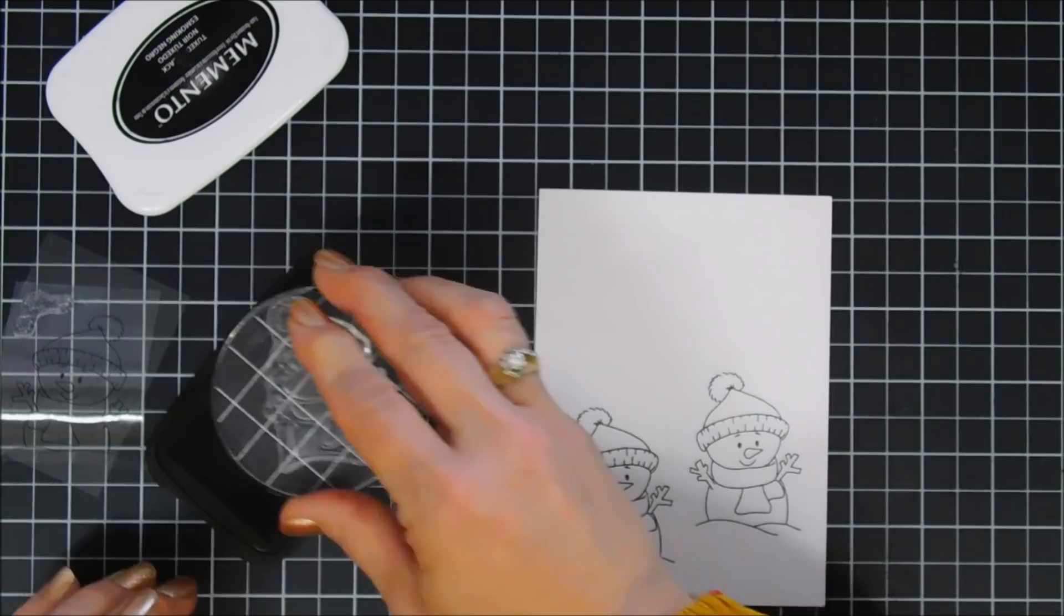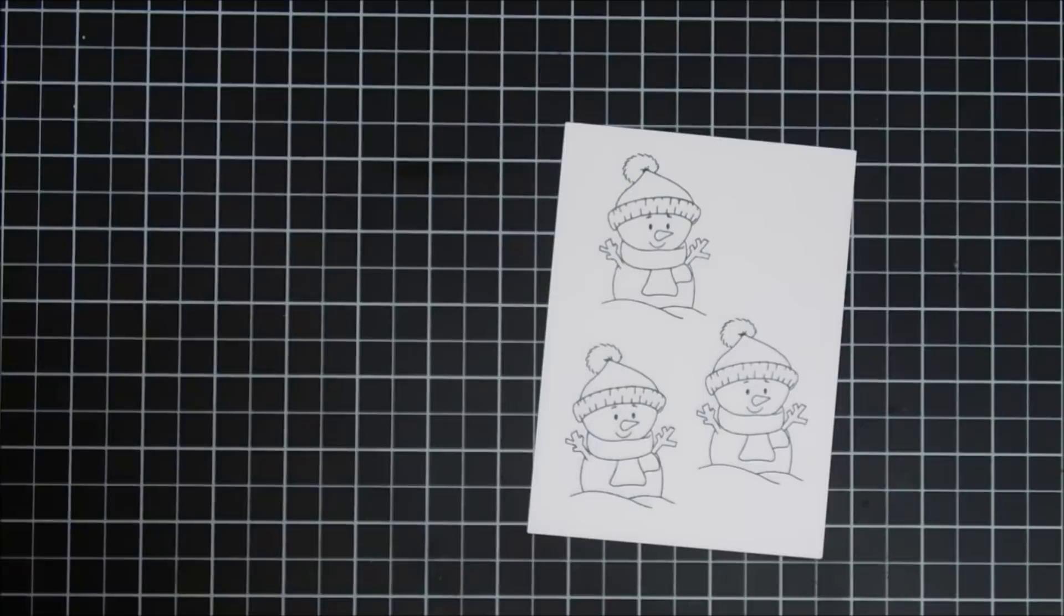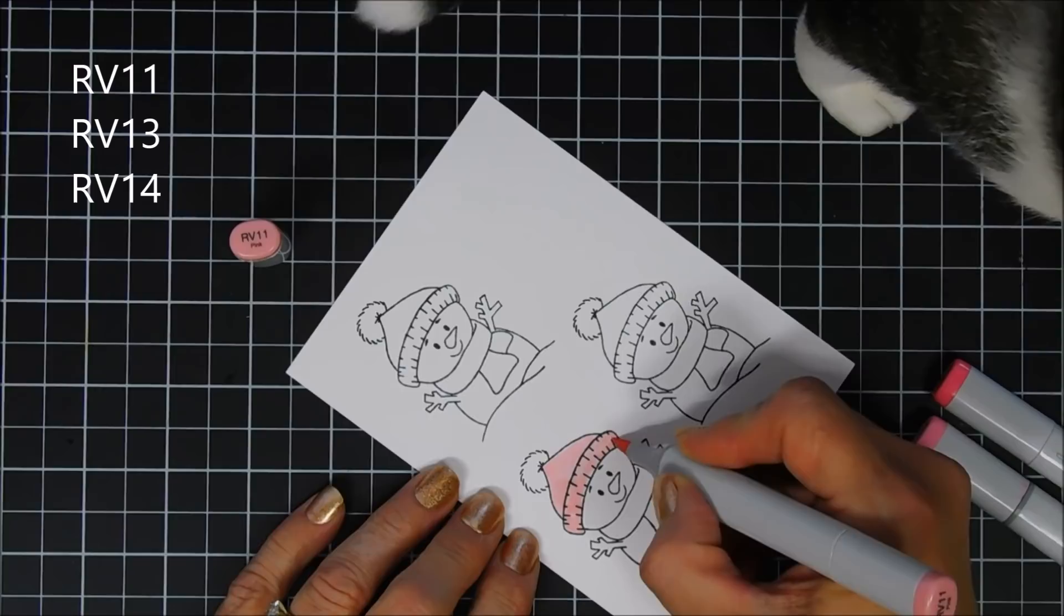So we're going to stamp him three times on some Neenah 80 pound cardstock with Memento Tuxedo Black ink and then I'm going to zoom in and play a little bit of music while I color and when I'm done coloring I will catch you back.